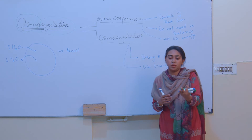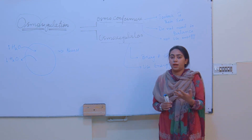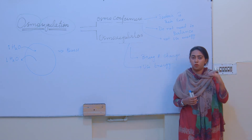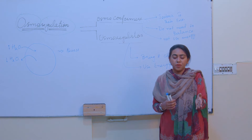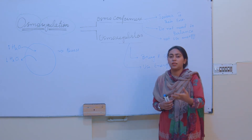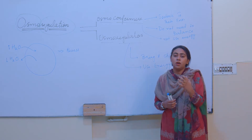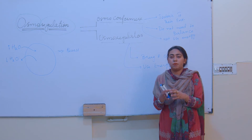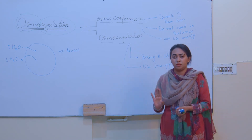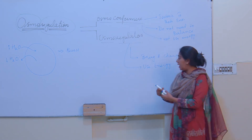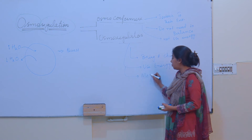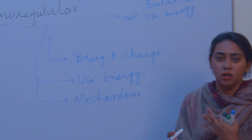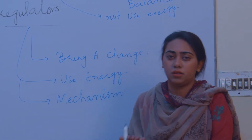When water is retained in the body, the message goes back to the hypothalamus that the level is okay. These osmoregulators have certain mechanisms and strategies to go against changes in the environment — to reduce or amplify them according to whatever condition is running at that time. They would change the osmosis rate to oppose the external change.